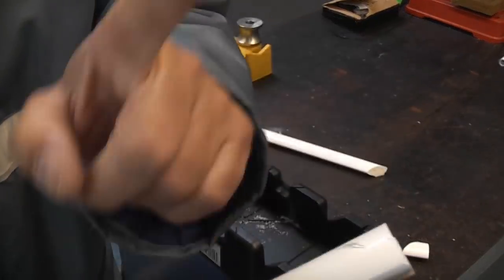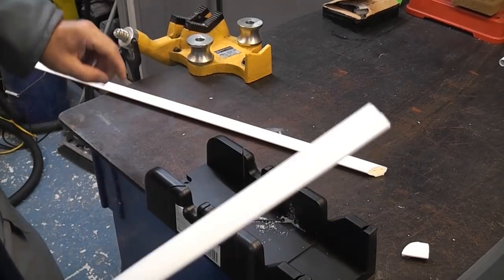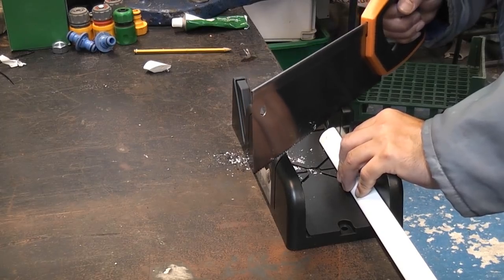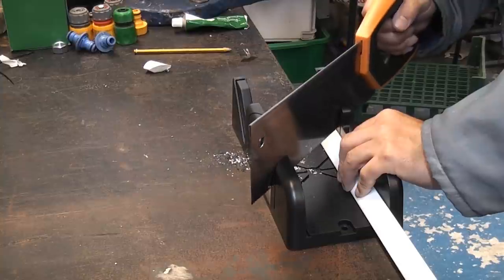So I've just drawn a line on that so that I get the cut in the right orientation. So again I'm going to cut a 45 degree miter on this piece.